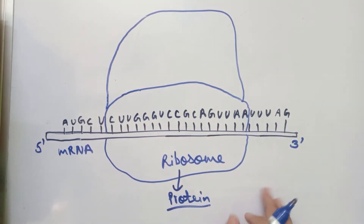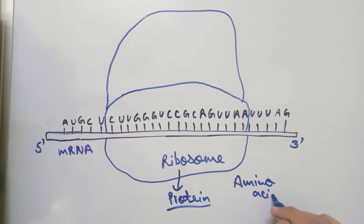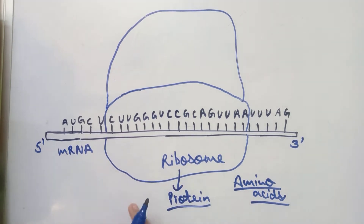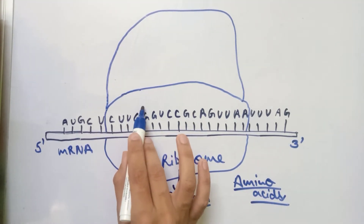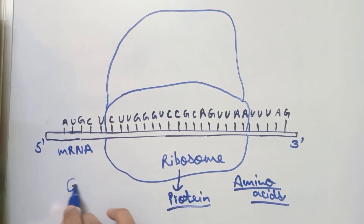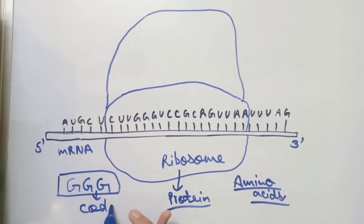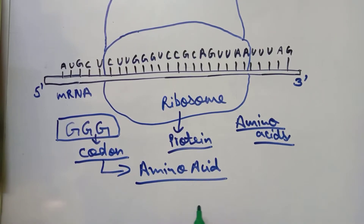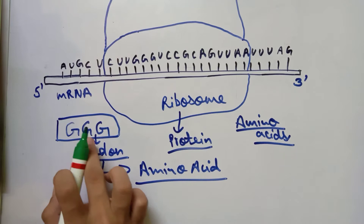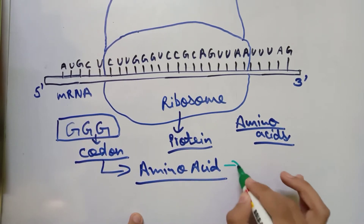These base pairs will be coded into amino acids. Scientists have already discovered the genetic code, so we now know that a triplet of base pairs — called a codon — codes for a specific amino acid. For example, the codon GGG codes for the amino acid glycine.